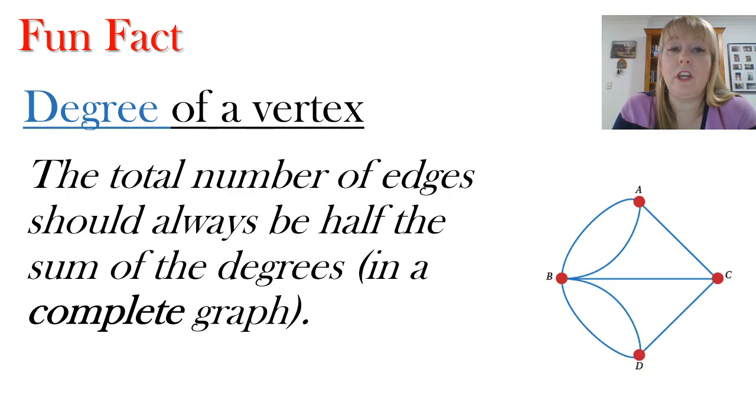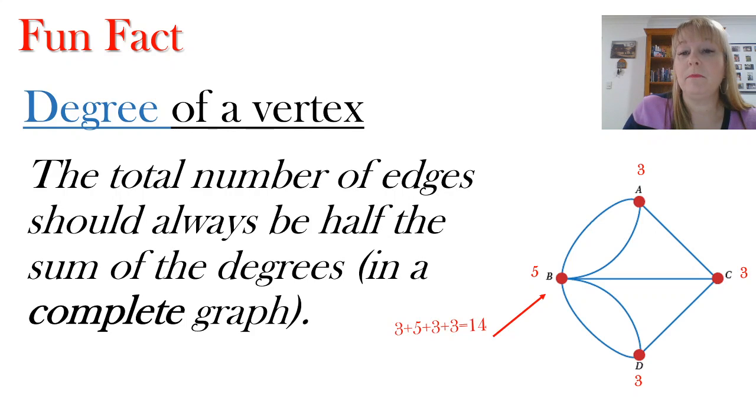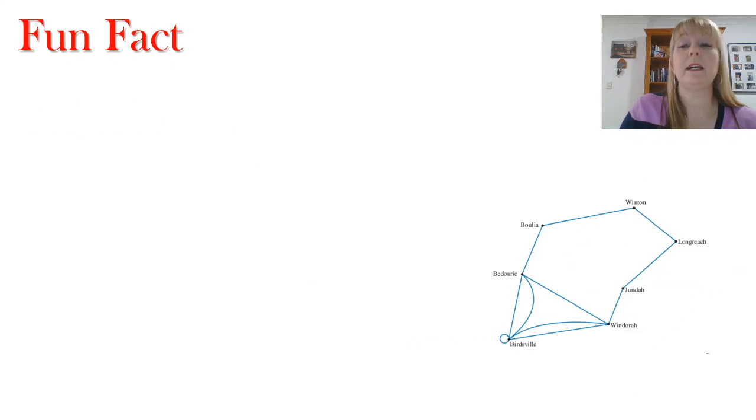Now a fun fact, the degree of a vertex, the total number of edges will always be half the sum of the degrees in a completed graph. So if we look at the degrees of each of these points, point A has three lines coming out from it. Point C has three lines coming out. Point D has three. Point B has five. Just have a little count of that. It's got the two loops plus the other line going out to point C. Now if I was to add all of these degrees together, five plus three plus three plus three equals 14. Now if I count the number of edges I've got, one, two, three, four, five, six, seven, well, the degrees is double the number of edges that I've got. So that's a fun fact that you need to remember. You might even be asked to prove it.